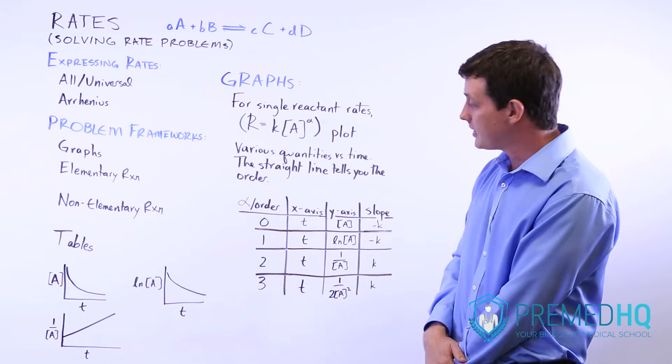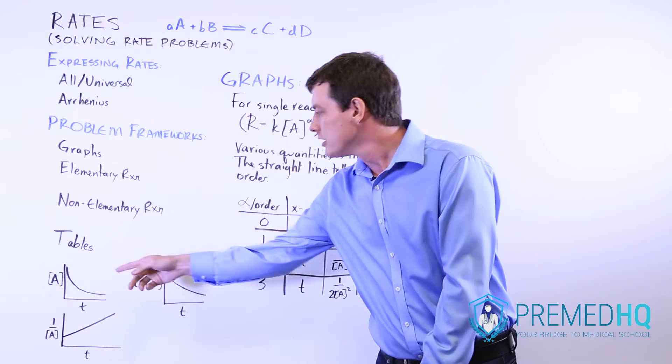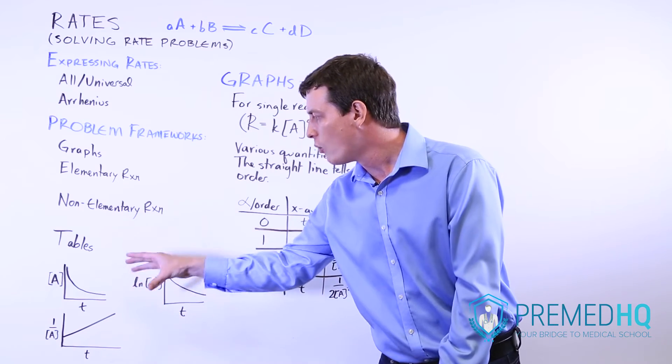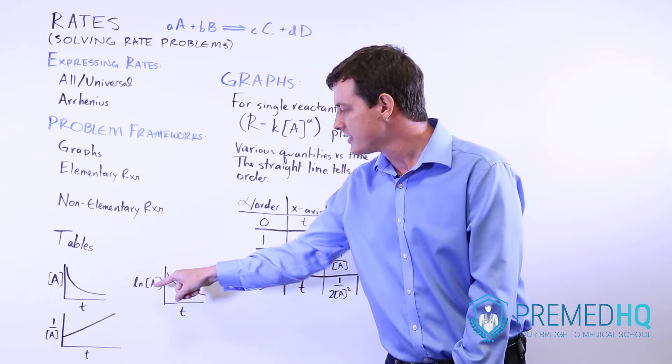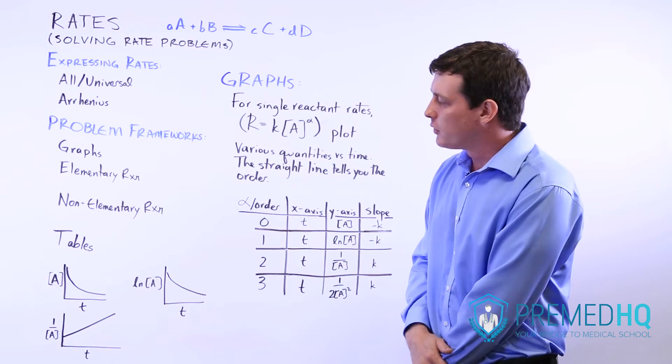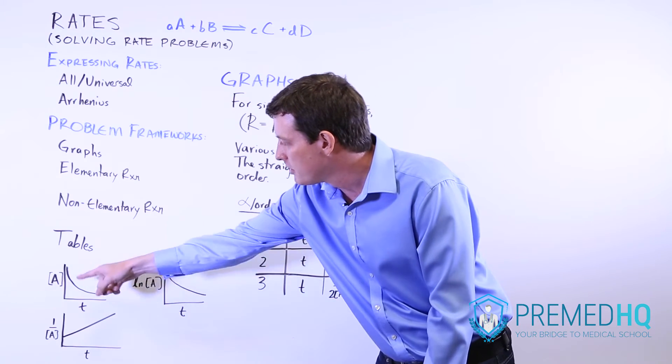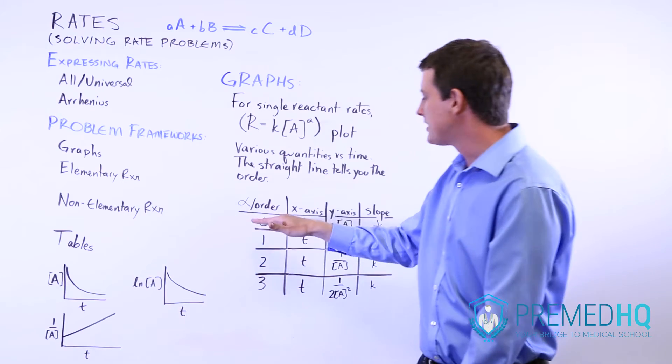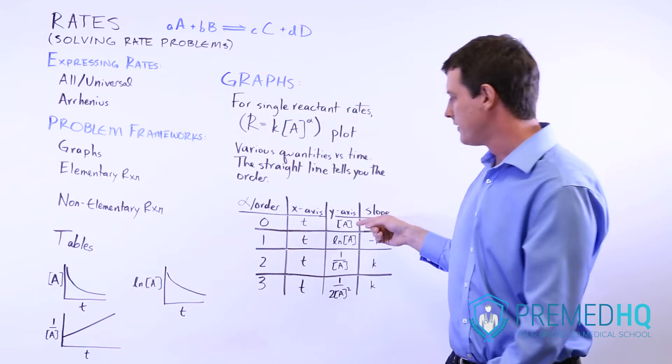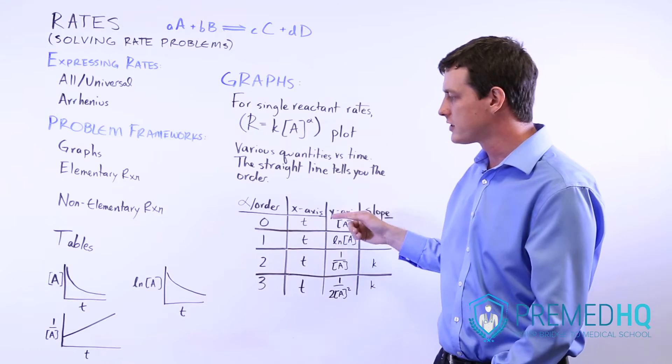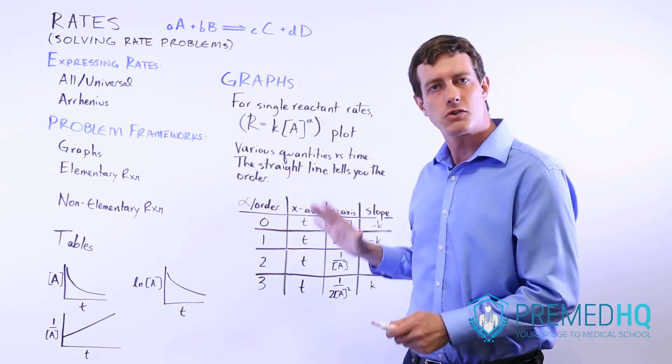And so if we have a set of tables like this, then we can look at these tables and figure out what order this reaction is with respect to the reactant A. Notice that this is a curved line when you plot A versus time. And so that means it's not zero order, because the zero order quantities of the concentration of A versus time, that does not yield a straight line.